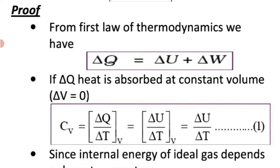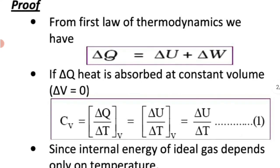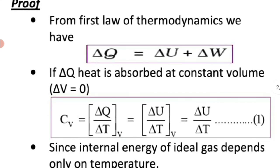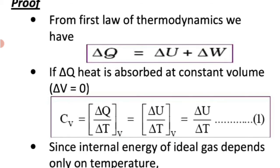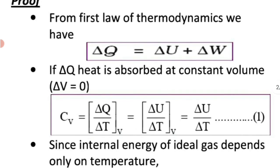Since the heat is absorbed at constant volume, the change in volume is zero. We know ΔW = P·ΔV, so if ΔV = 0, then ΔW = 0. Therefore ΔQ = ΔU. The expression for Cv becomes Cv = ΔU / ΔT at constant volume, because ΔQ is the same as ΔU since the gas is heated at constant volume.